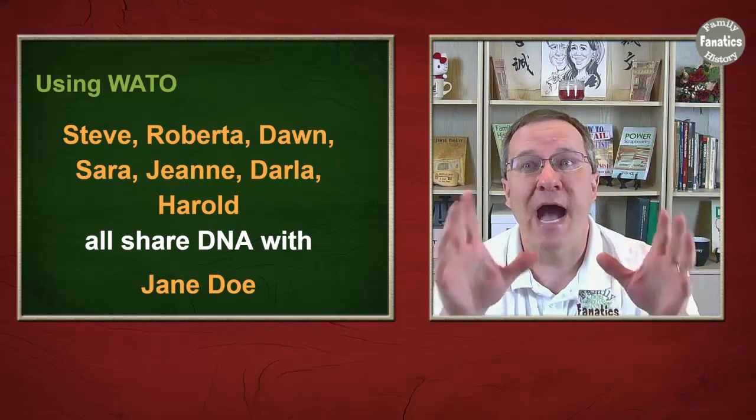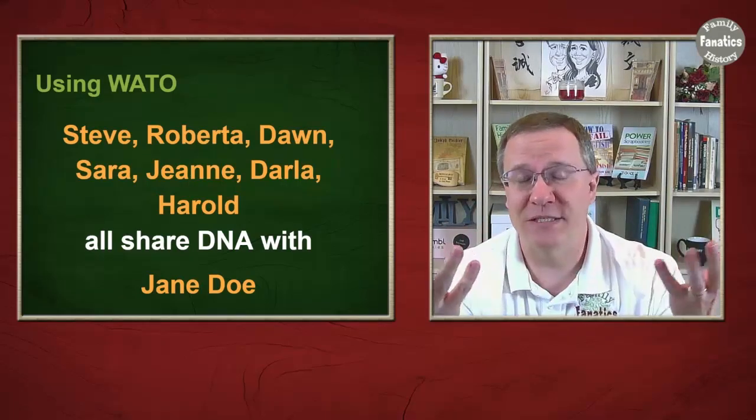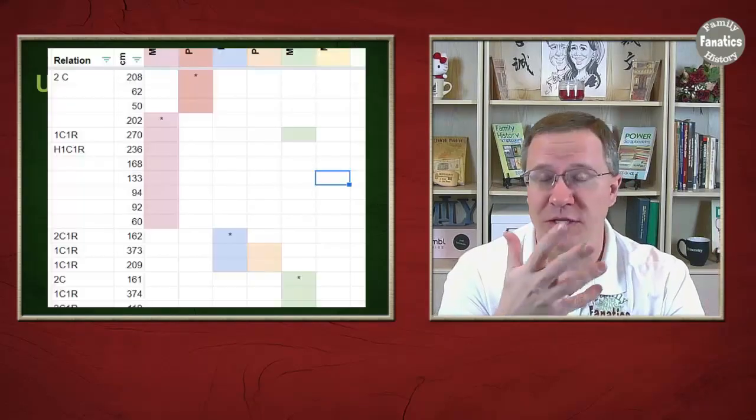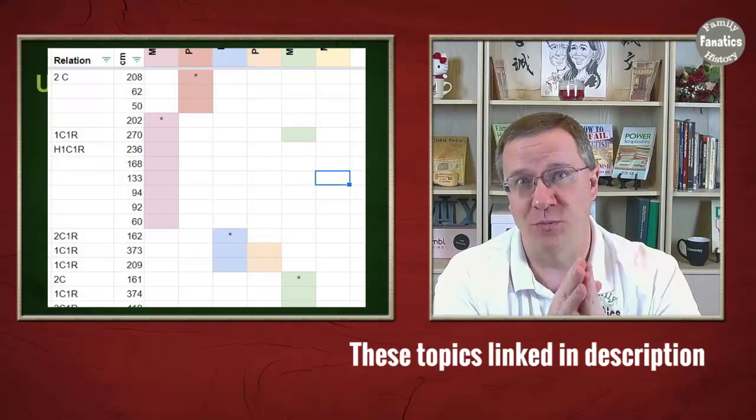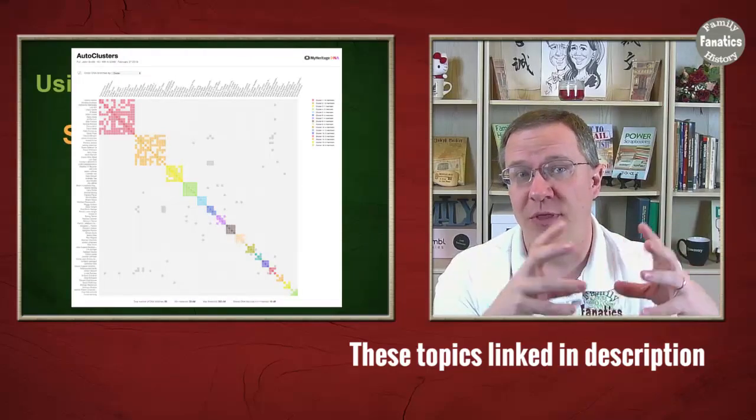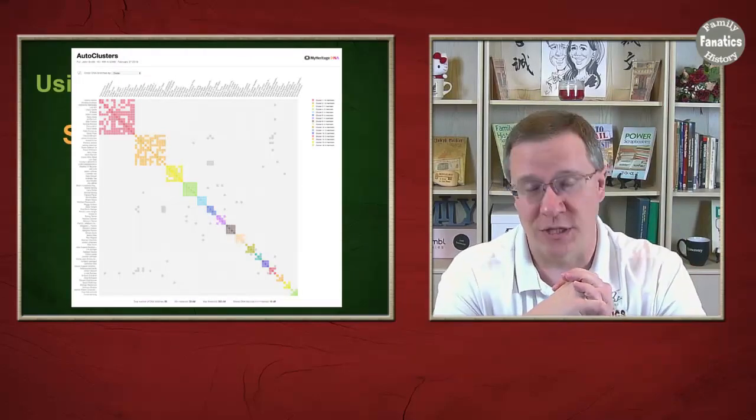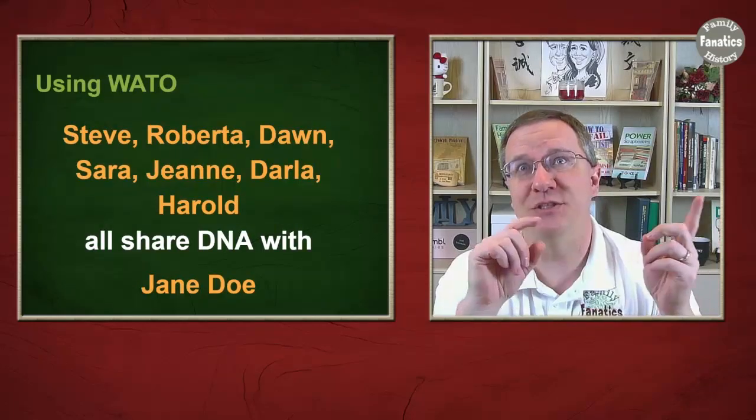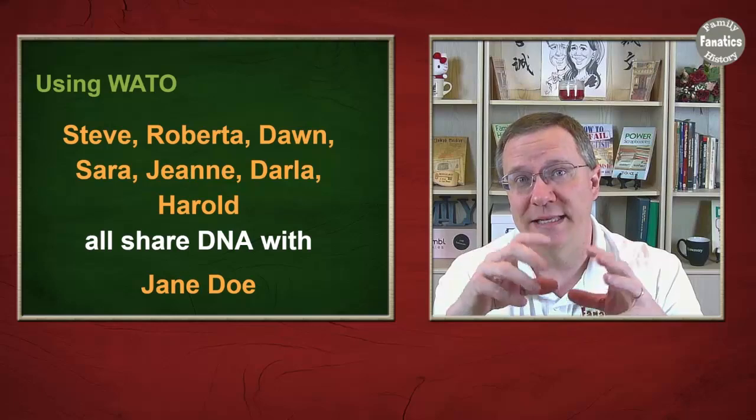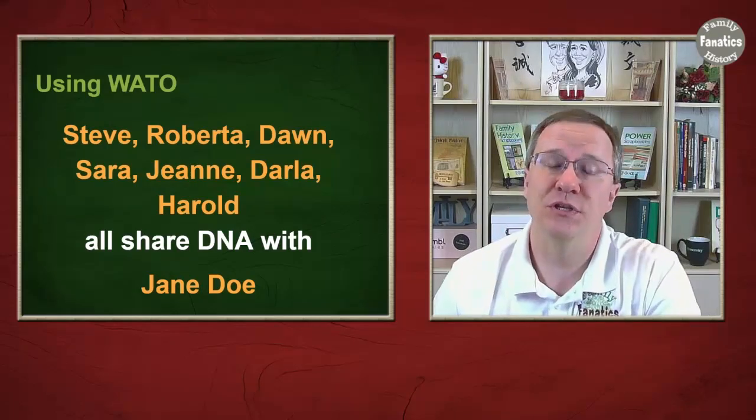Now how do you find this group of matches? Well that is going to be through some different methods. Maybe you're doing a Leeds chart and you find a cluster that's related together, or you do one of the auto clusters and you're looking at those people that fit within one of those auto clusters. The key here is that you need to find this group of people that is all related together and related to your target person.